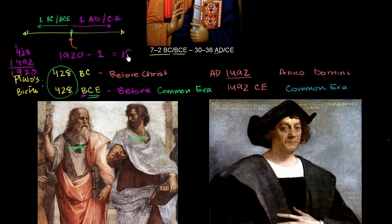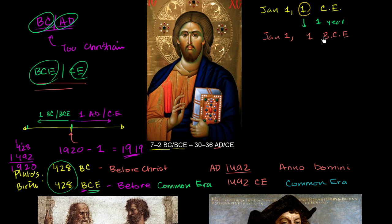So it is 1,919 years. The same way that the difference between 1 AD and 1 BCE — you could almost view it as positive and negative numbers. You'd say positive 1 minus negative 1 gives you 2, but there is no 0, so you subtract another 1, giving exactly one year difference. That's what the no year 0 does to us.